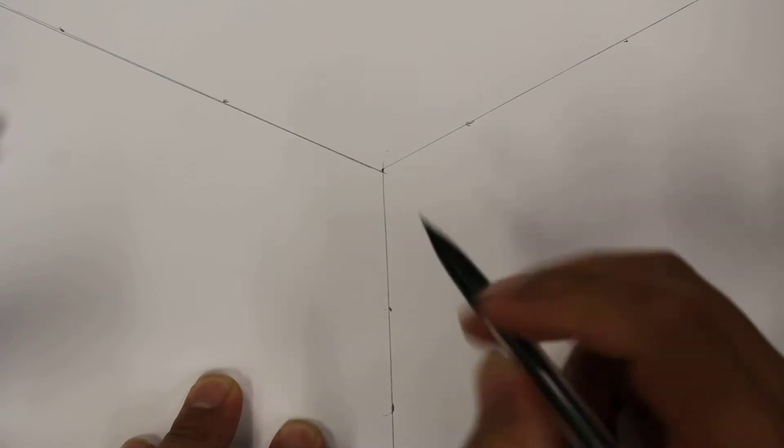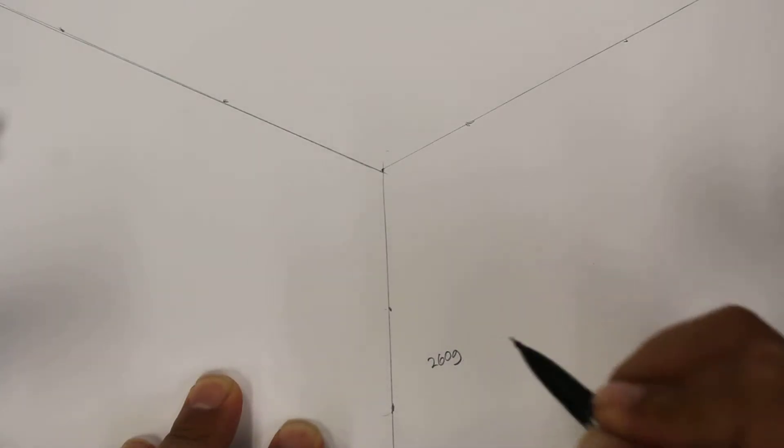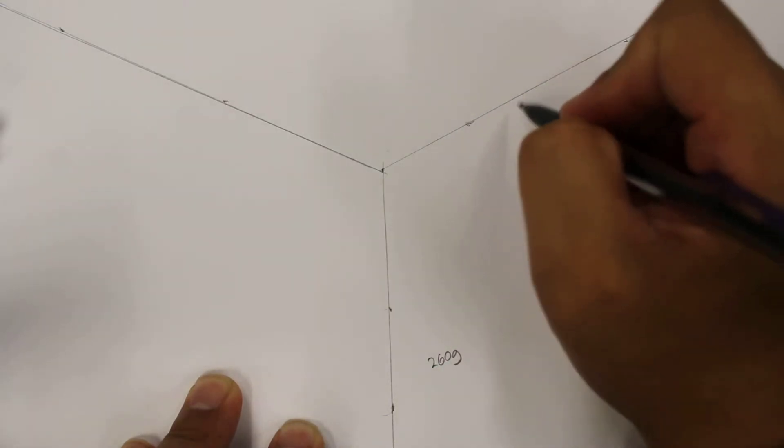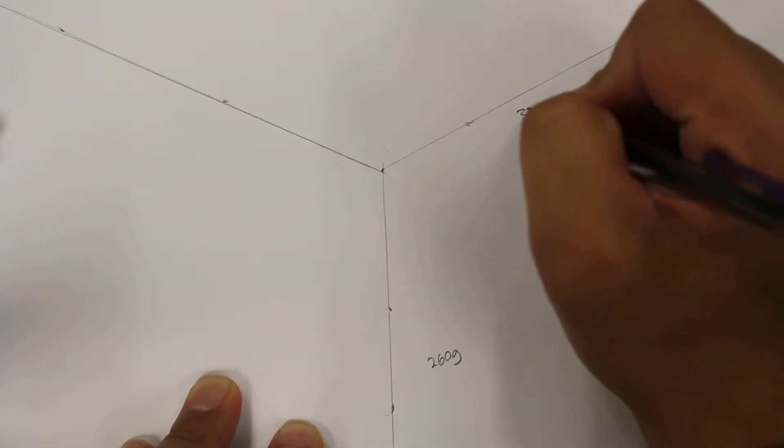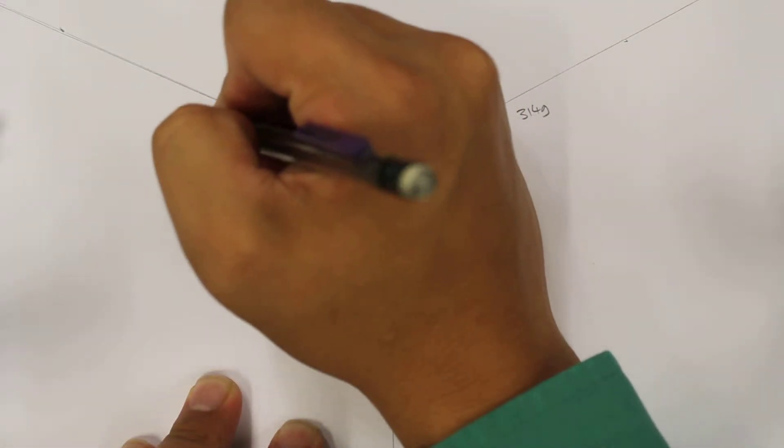Now in the experiment we have weighed the amount of mass and so the mass on the center portion here was 260 grams. The mass on the right hand side was 314 grams and on the left hand side was 312 grams.